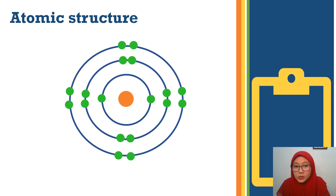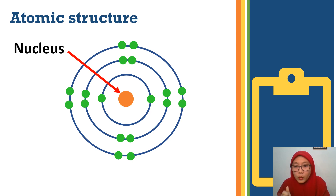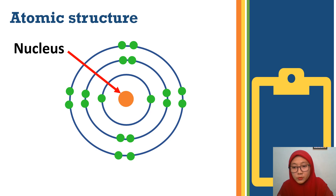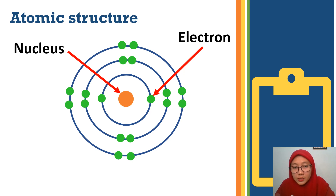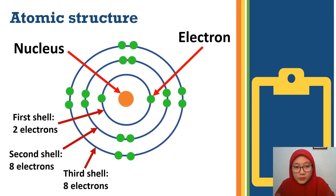This is the atomic structure. In atomic structure, at the middle is the nucleus. The particles in the nucleus are the proton and also neutron. Around the nucleus, we have shells consisting of electrons. We have the first shell, second shell, third shell, and it can go up to seven shells.